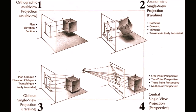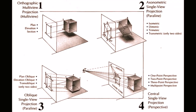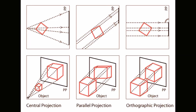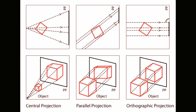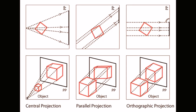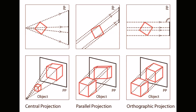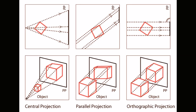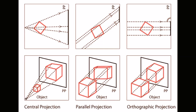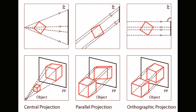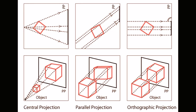The two most characteristic features of perspective are that objects are smaller as their distance from the observer increases, and that they are subject to foreshortening, meaning that an object's dimensions along the line of sight are shorter than its dimensions across the line of sight.